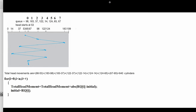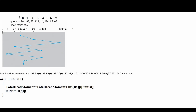So this is our problem. Here n equals 8, meaning we have 8 requests from index 0 to 7. The requests are: 98, 183, 37, 122, and so on — 8 tracks in total. Initially the head is at 53. We arrange them in ascending order, assuming the disk has 200 tracks.